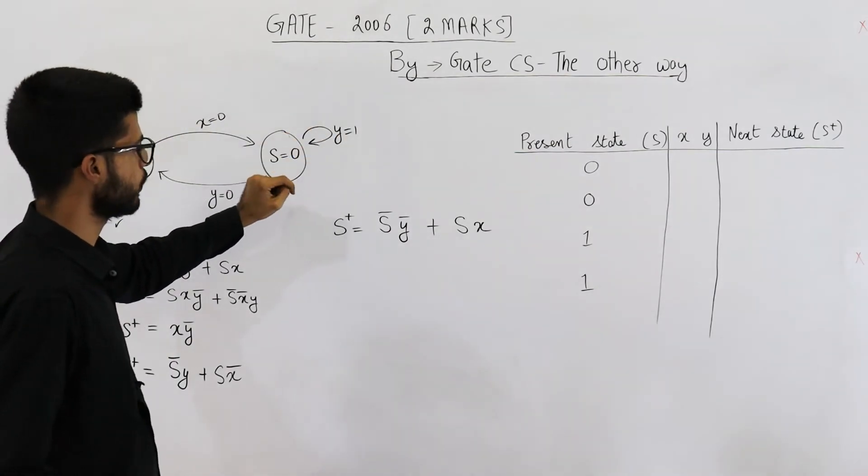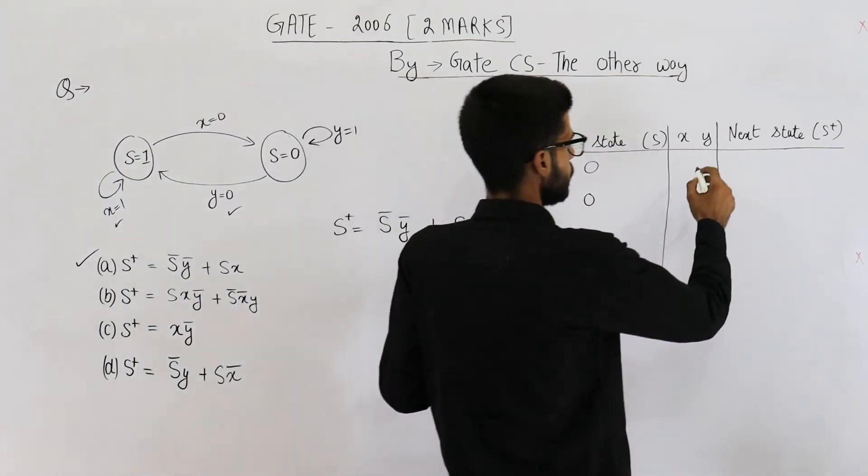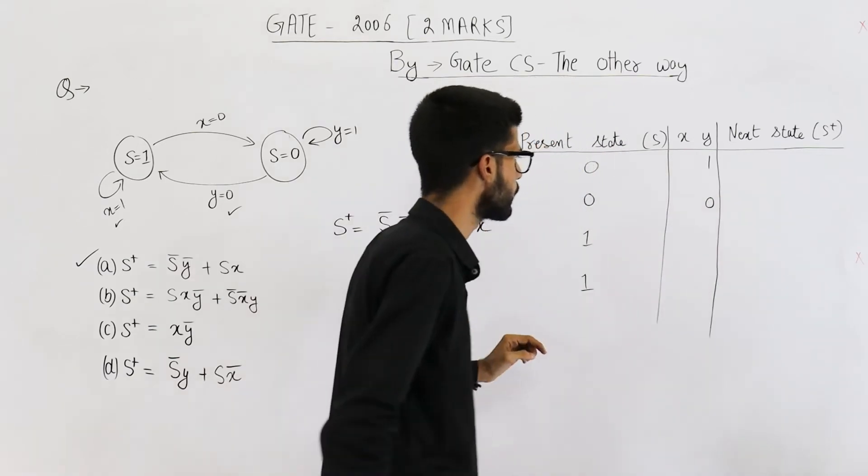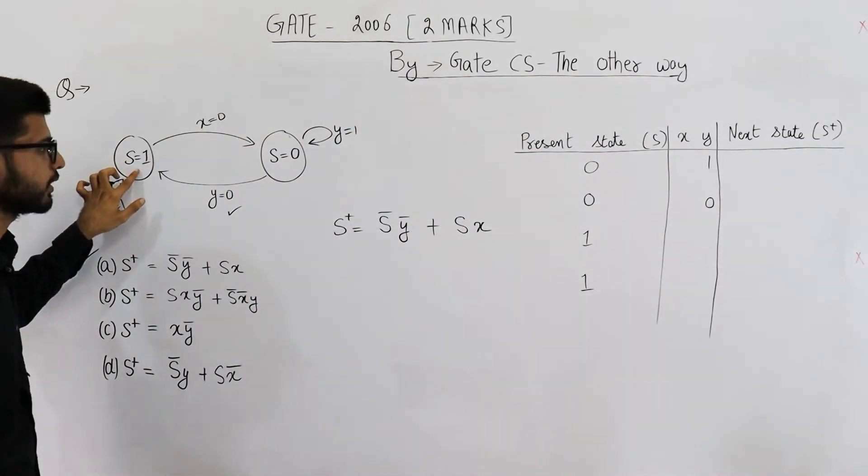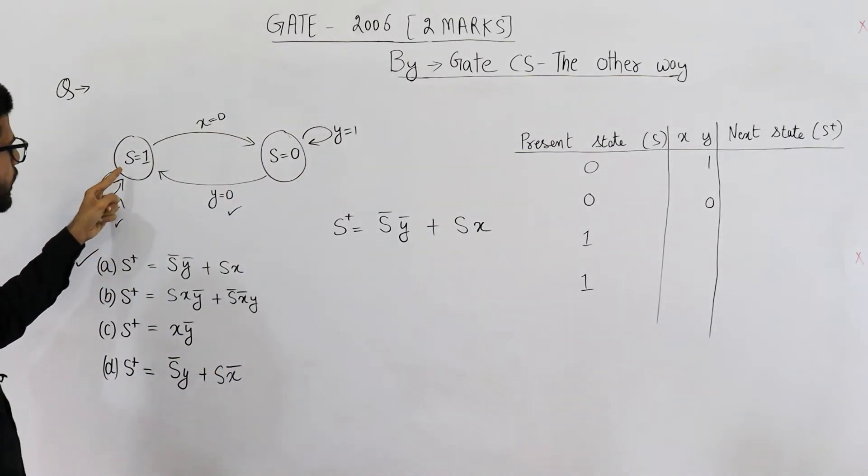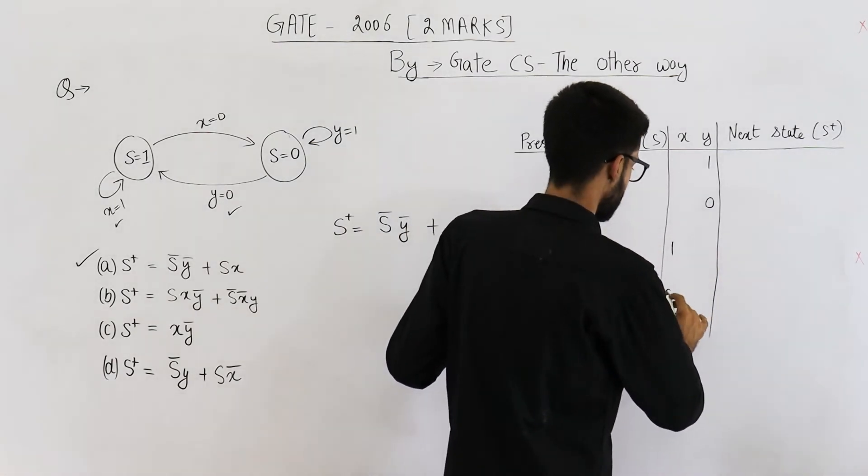So if you are on state 0, that means this state. First transition is y is equal to 1, second transition is y is equal to 0. So y can be 1 and y can be 0. If you are on state 1, that means present state as 1, there are again two transitions x is equal to 1 and x is equal to 0. x can be 1 or 0.